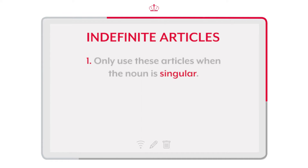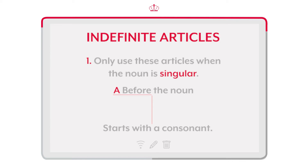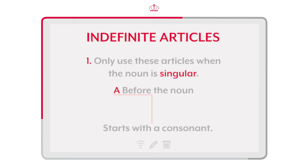First, we only use these articles when the noun is singular. Now, we use 'a' before the noun when the noun starts with a consonant. Primero, solo usamos estos artículos cuando el sustantivo es singular. Ahora, utilizamos 'a' antes de un sustantivo que inicia con una consonante.